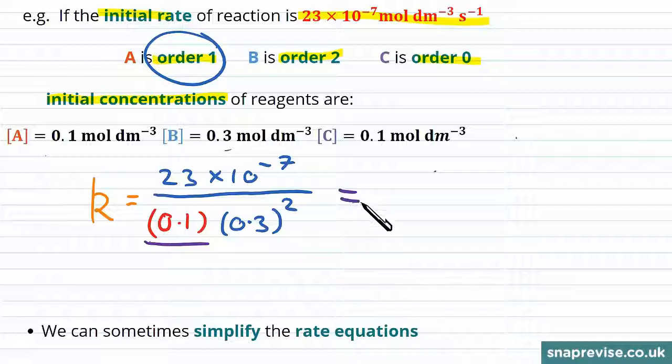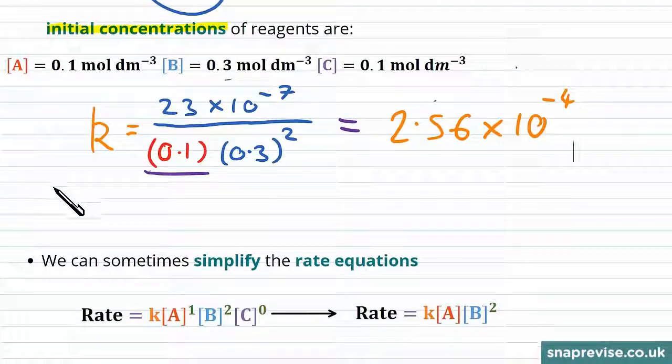So if we put this through our calculator, we get a numerical answer of 2.56 times 10 to the minus 4, and that's correct to 3 significant figures. And we're going to talk about the units you would include for this in a moment.